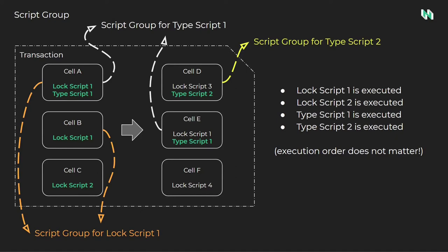Next, we'll cover the script group concept. Every script that is executed on-chain will have a corresponding script group for the transaction. The script group contains all of the cells in the transaction that use the currently executing script. This becomes a very convenient resource that scripts can utilize when performing validation on cells. The script group for LockScript1 contains cell A and cell B. The script group for TypeScript1 contains cell A and cell E. The script group for TypeScript2 contains only cell D.